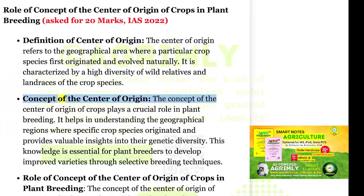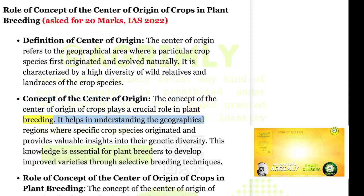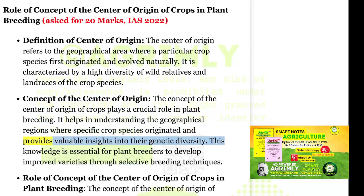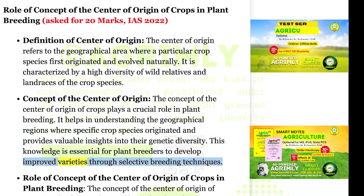The concept of the Center of Origin of Crops plays a crucial role in plant breeding. It helps in understanding the geographical regions where specific crop species originated and provides valuable insights into their genetic diversity. This knowledge is essential for plant breeders to develop improved varieties through selective breeding techniques.